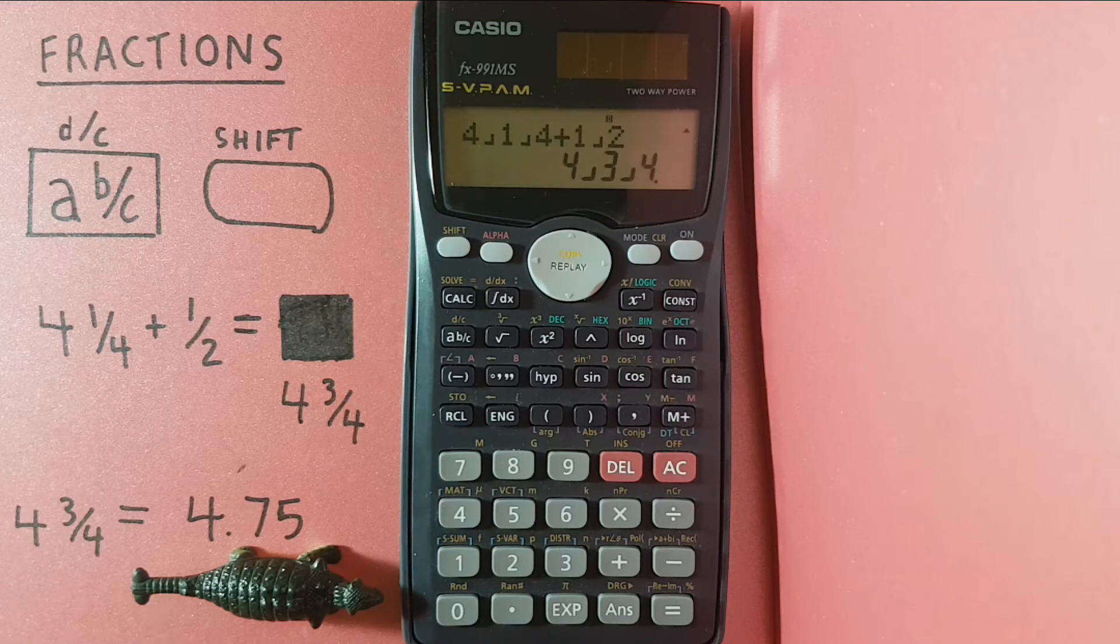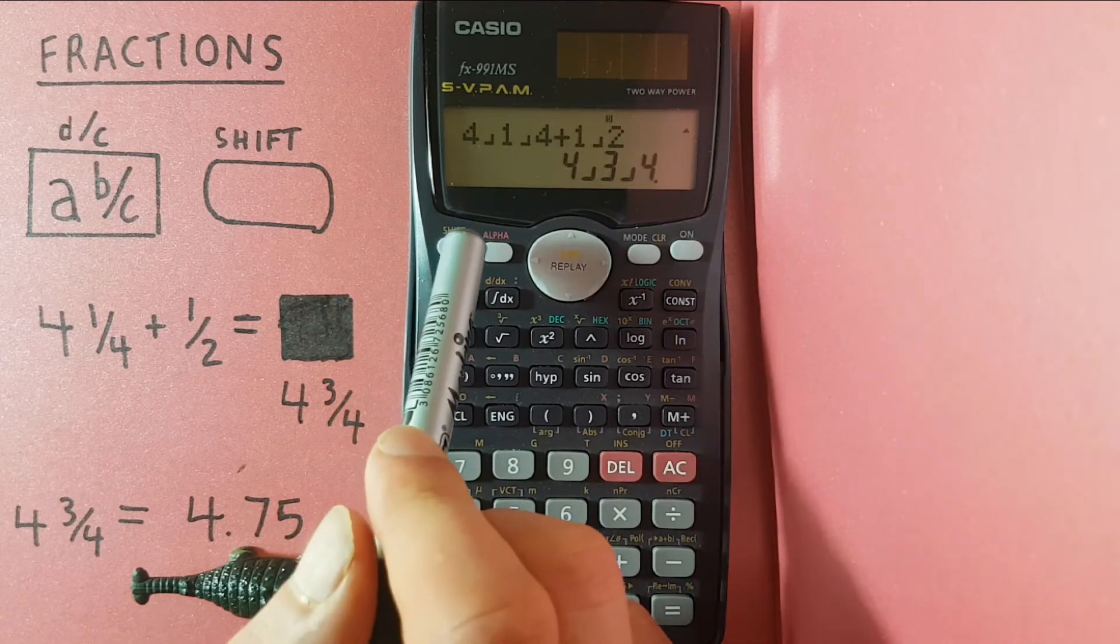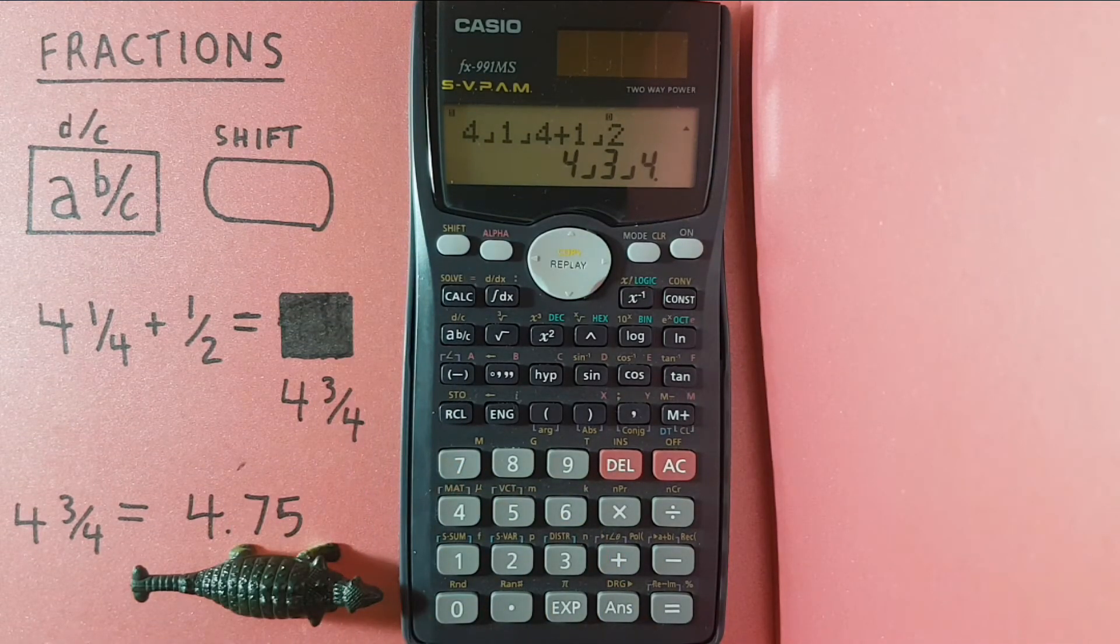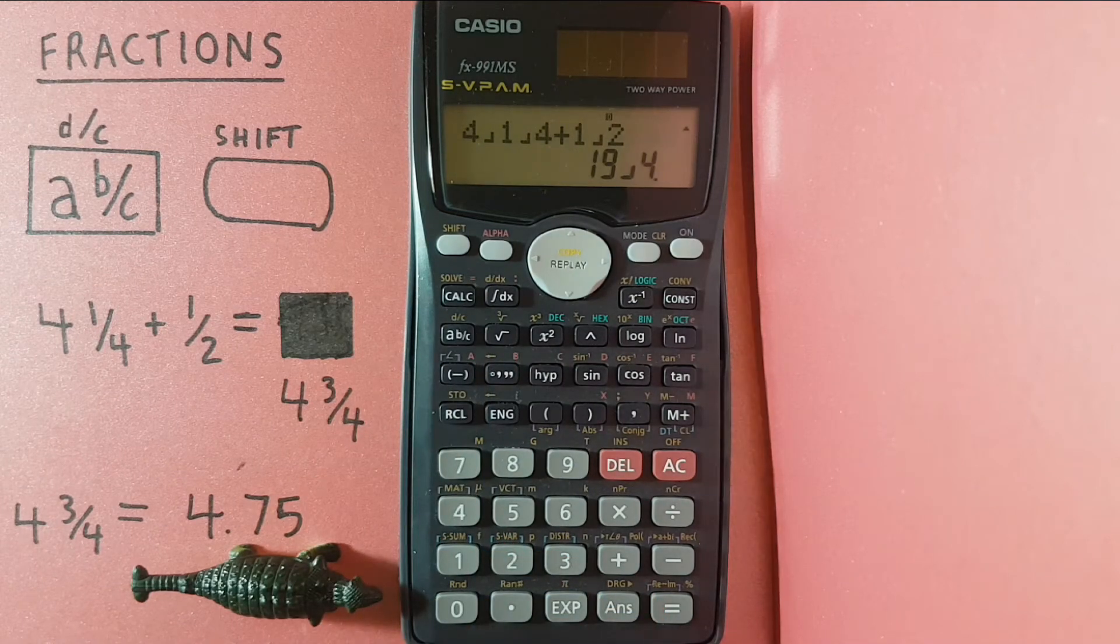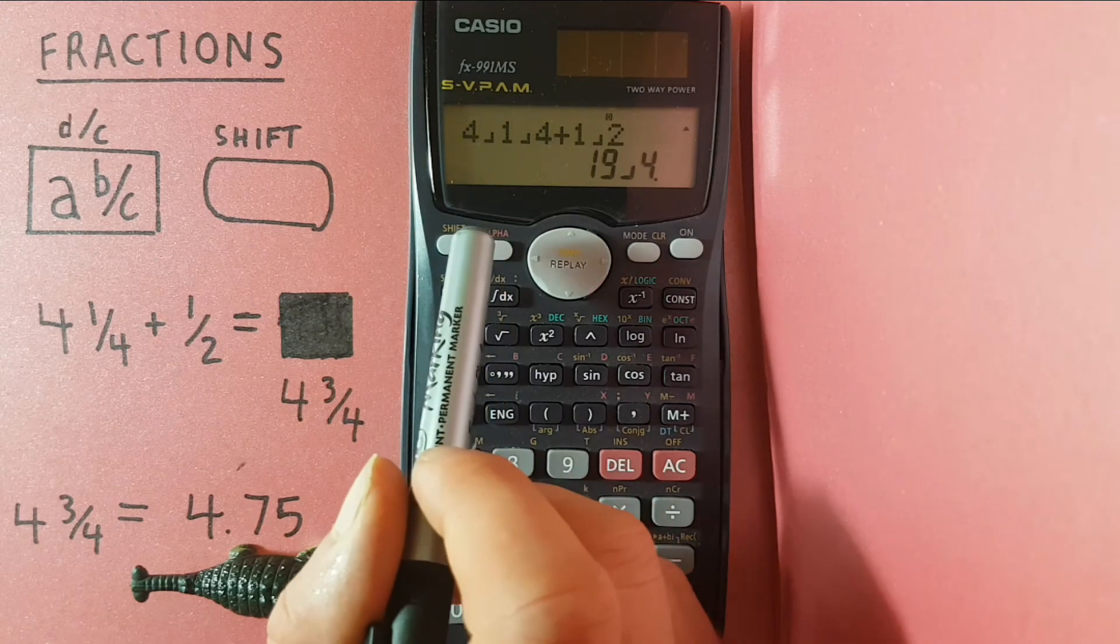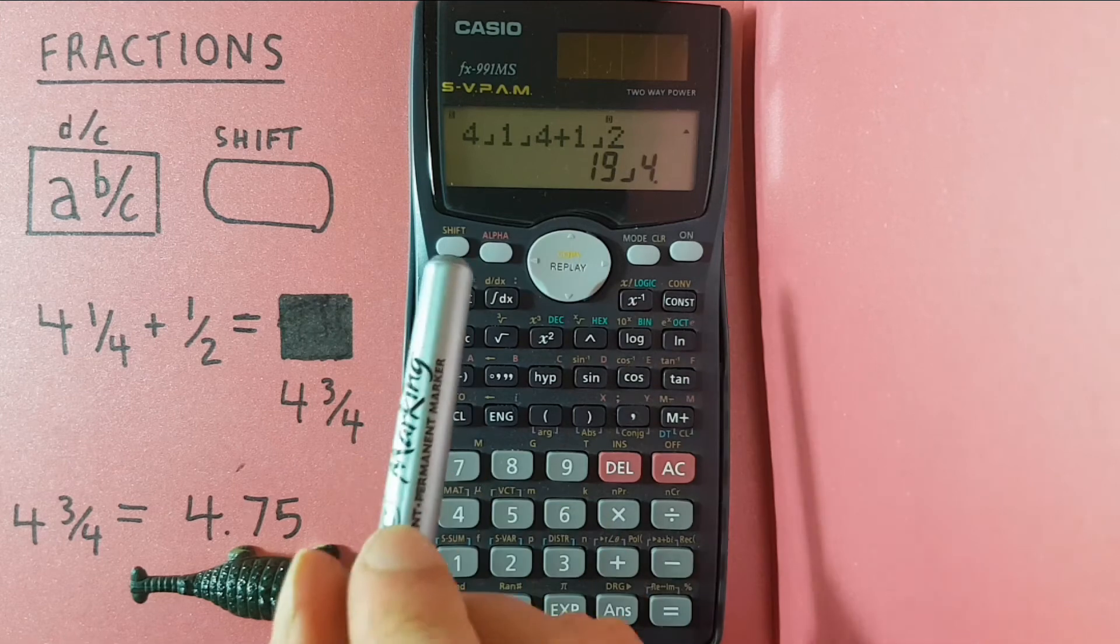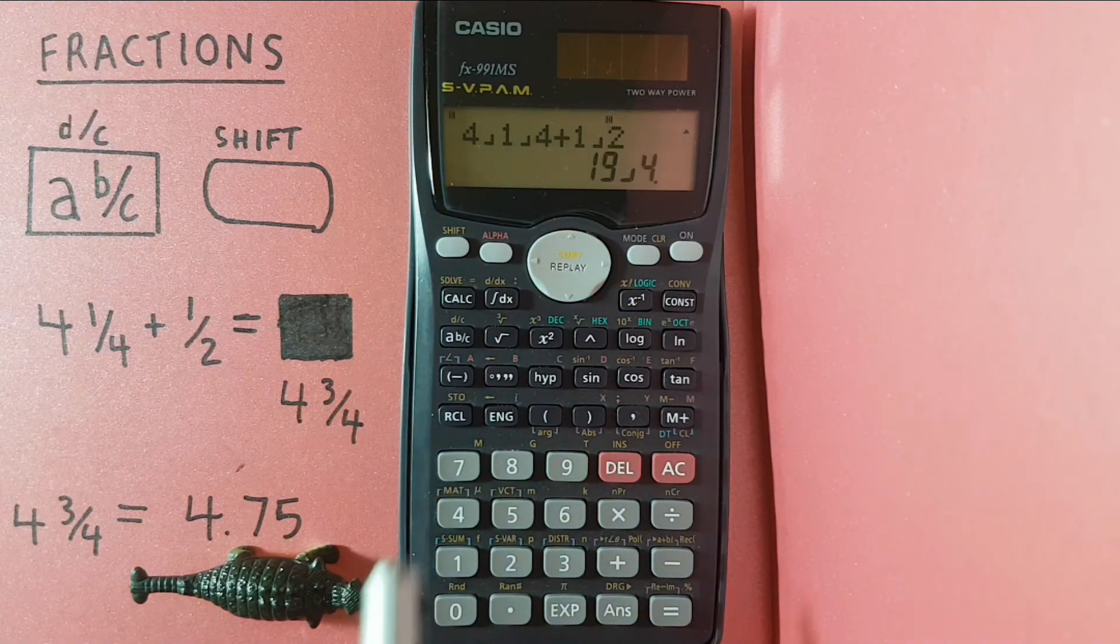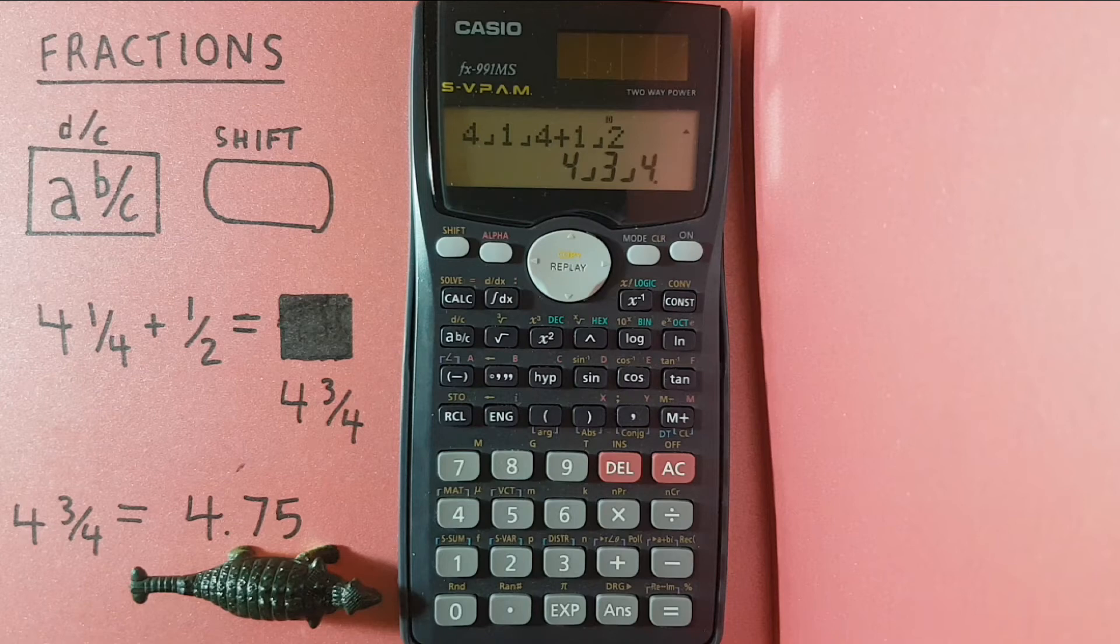This can also be converted from a mixed to an improper fraction by using the SHIFT A B over C key to now give us 19 over 4. And we can go back by again going SHIFT A B over C, and we're back at 4 and 3 quarters.